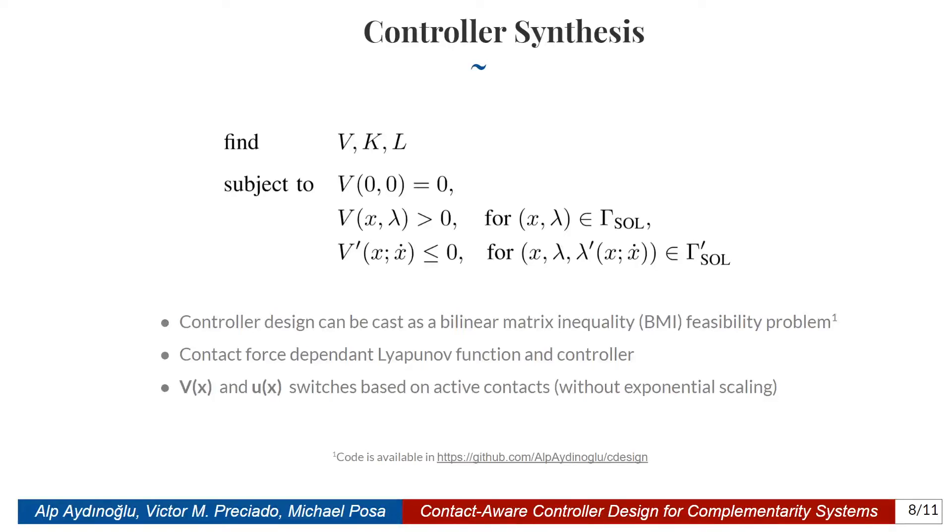After building all this machinery, now we are ready to cast the controller design problem as a bilinear matrix inequality feasibility problem. Observe that we want to find the Lyapunov function V and the controller parameters K and L, such that these three constraints hold. The first constraint tells us that at the equilibrium point, the value of the Lyapunov function is zero. The second constraint tells us that the Lyapunov function is strictly positive for every x-lambda pair in the gamma solution set. If anybody is interested in how to find this gamma solution set, please take a look at the paper. The third constraint tells us that the directional derivative of the Lyapunov function in the direction x-dot should be always non-positive for the triple x, lambda, and lambda prime, where lambda prime is the directional derivative of lambda in the direction x-dot, for the triple in the set gamma prime. Again, if anybody is interested in how to find this gamma prime set, please take a look at the paper.